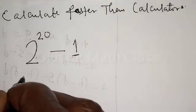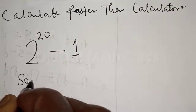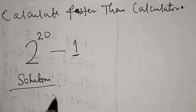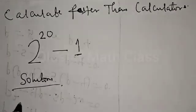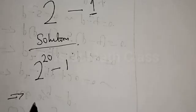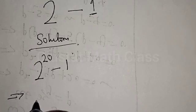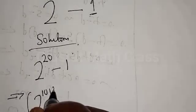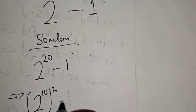Solution. We have 2 raised to power 20 minus 1. Now, 2 raised to power 20 can be expressed as 2 raised to power 10, all squared, minus 1.